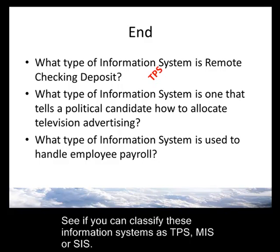What type of information system is one that tells a political candidate how to allocate television advertising? We have demographics from all the different regions, we know where the swing vote is and what issues resonate with those people. What type of information system is going to help someone decide how to allocate the advertising dollars? That's right — executive information system. This is a strategic decision, and we might pull information from several different sources and then make our best decision.